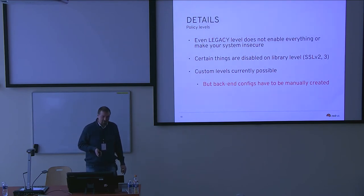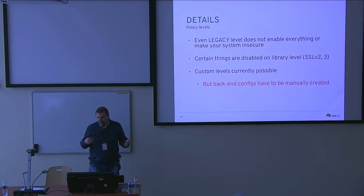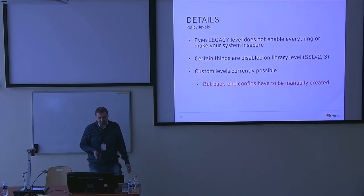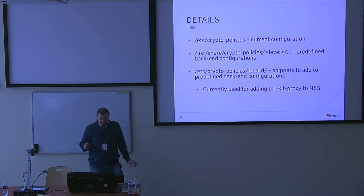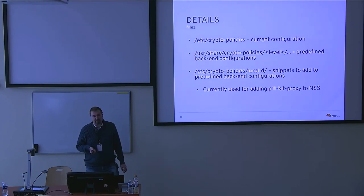Custom levels are currently somehow possible, but it's very hard to do them. You would have to create the policy and install it yourself. And there is no fixed API for the policies, so with a new version of crypto policies it could break. These are the file structures on the system. There is something called local.d, which allows adding some additional configuration to the predefined backend configuration. Currently it's used for any PKCS#11 proxy to NSS by default.